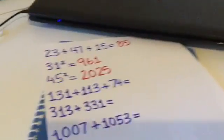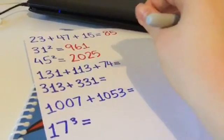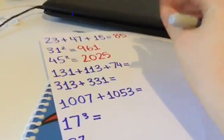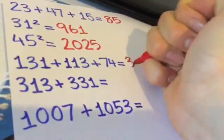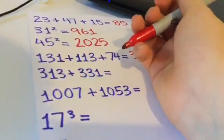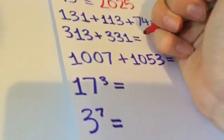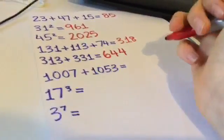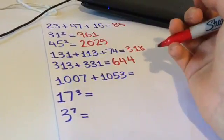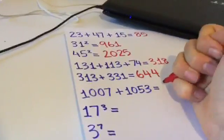131 plus 113 plus 74. So you start with 131, and then you add 113 onto it, which is 244. And then you add 74 on it, which is 318. Then you add 331 onto 313. So you add first, if you can add 31 to 313, which is 344, and another 300, which is 644. And if you add 1053 on 1007, that's quite easy because there's a zero on both sides. That's 2060.